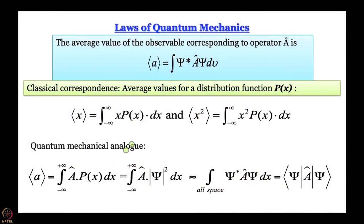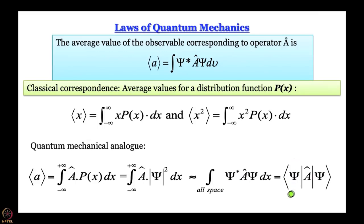So the quantum mechanical analog is: operator Â operates on the probability distribution. Integrating over all space with psi-star factored out gives ∫ψ* Â ψ dx. We often write this in convenient Dirac bracket notation where the bra vector contains the complex conjugate ψ* and the ket vector contains Âψ. A second line may be written for symmetry but is not required.